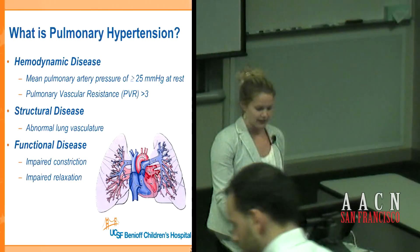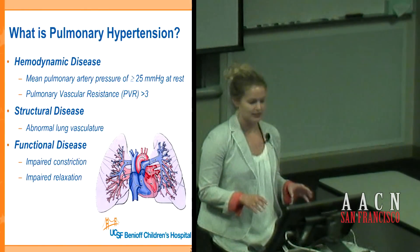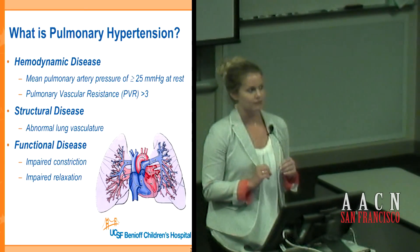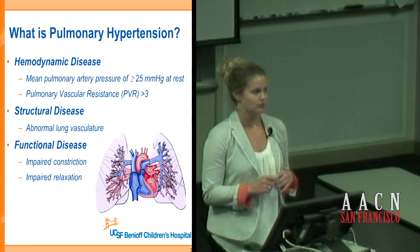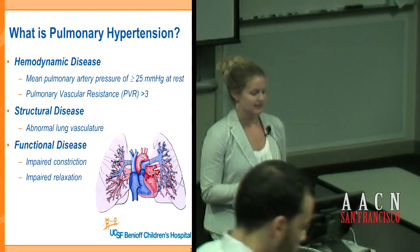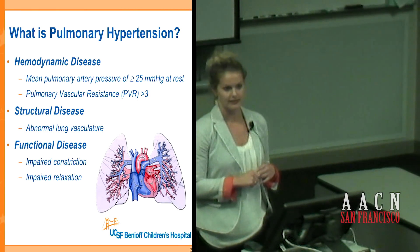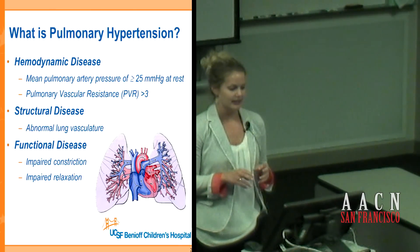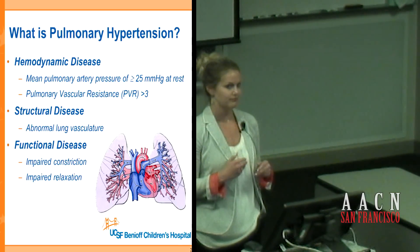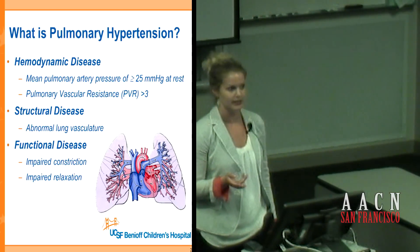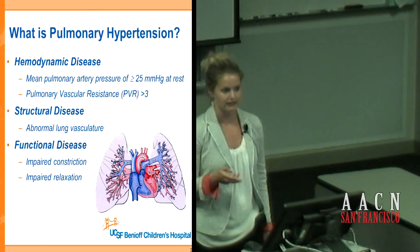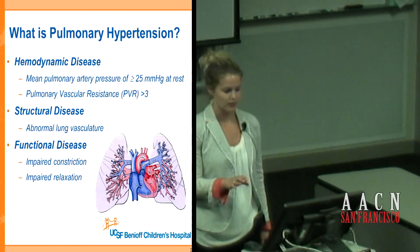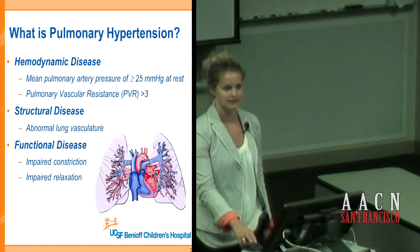To begin, what is pulmonary hypertension? It's a hemodynamic, structural, and functional disease. The definition is that the mean pulmonary artery pressure is greater than 25 at rest, measured by right heart catheterization — that's an invasive procedure. In pediatrics there's debate whether it should be a percentage value, since neonates can get pulmonary hypertension and their mean pulmonary arterial pressure might not be above 25. The definition still remains greater than 25, and another definition is pulmonary vascular resistance greater than three.